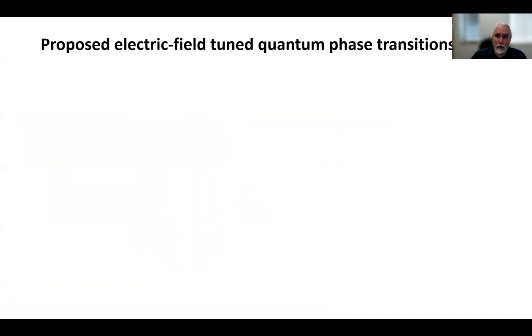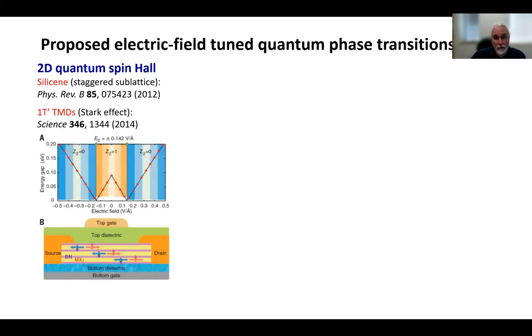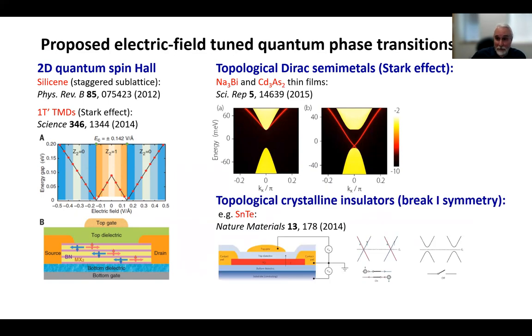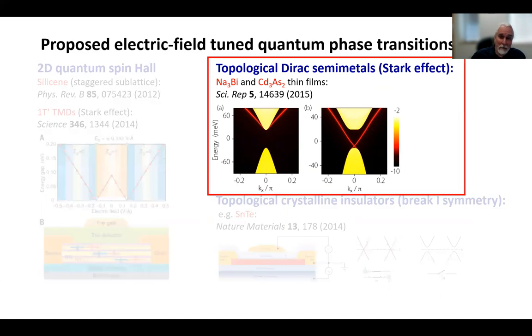So this kind of electric field tuned transition has been proposed in a number of materials. It's been proposed in staggered honeycombs like silicene, in the 1T prime transition metal dichalcogenides, in topological Dirac semimetals, which I'll talk a little bit about in a minute, and in topological crystalline insulators as well. So these are the materials that we have worked on, particularly sodium-3-bismuth.